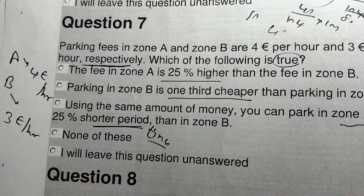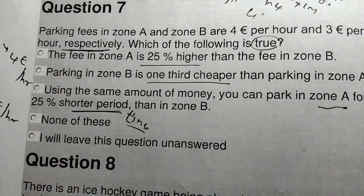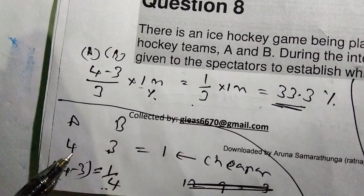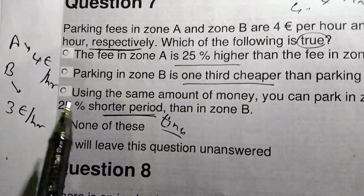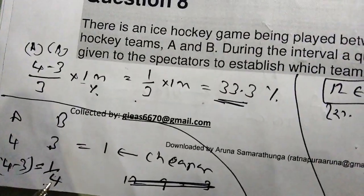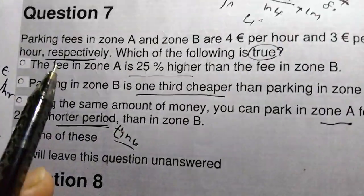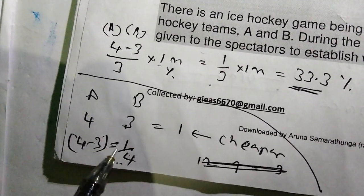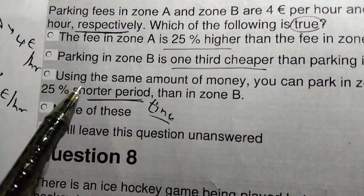Second statement: parking in zone B is one third cheaper than parking in zone A. The difference is one euro, and you compare it with zone A which is four euros. One divided by four is one quarter — not one third. So this statement is also wrong.